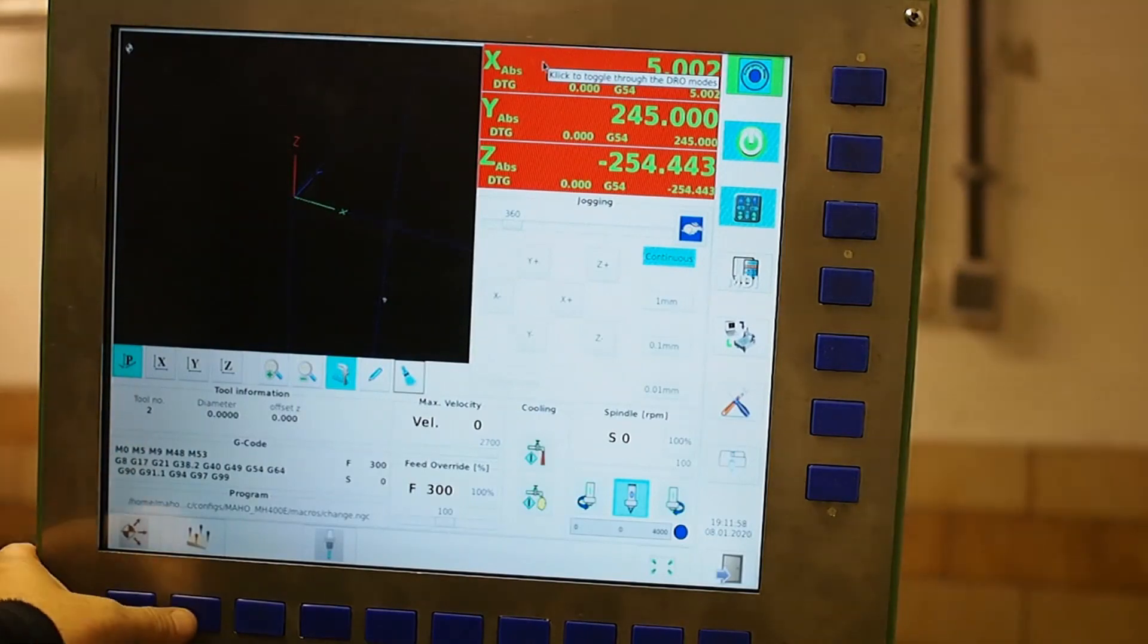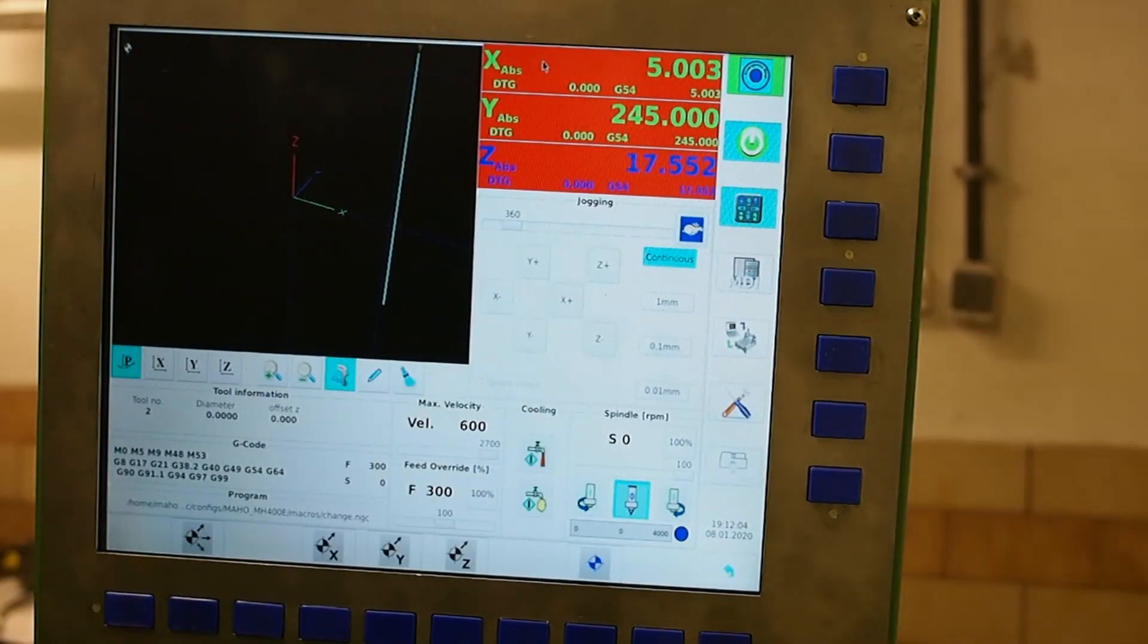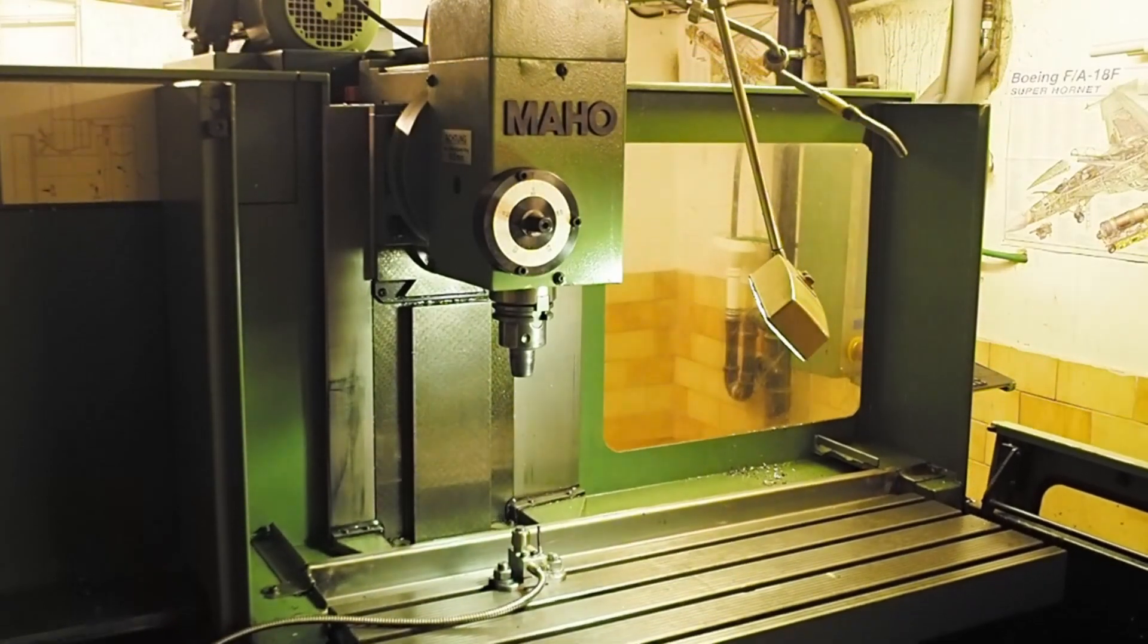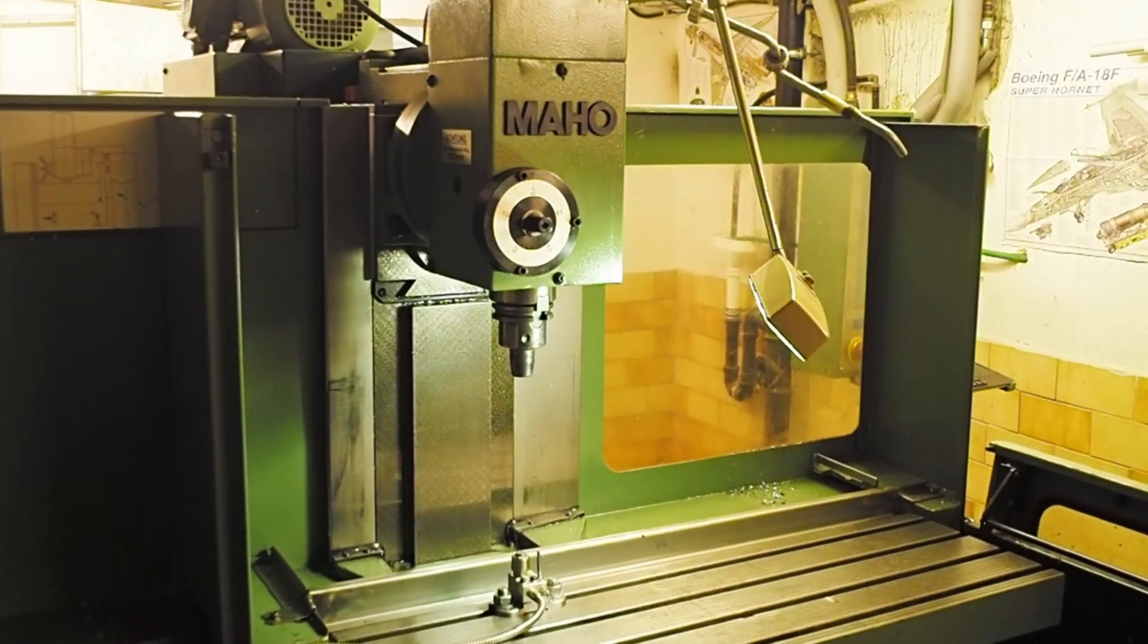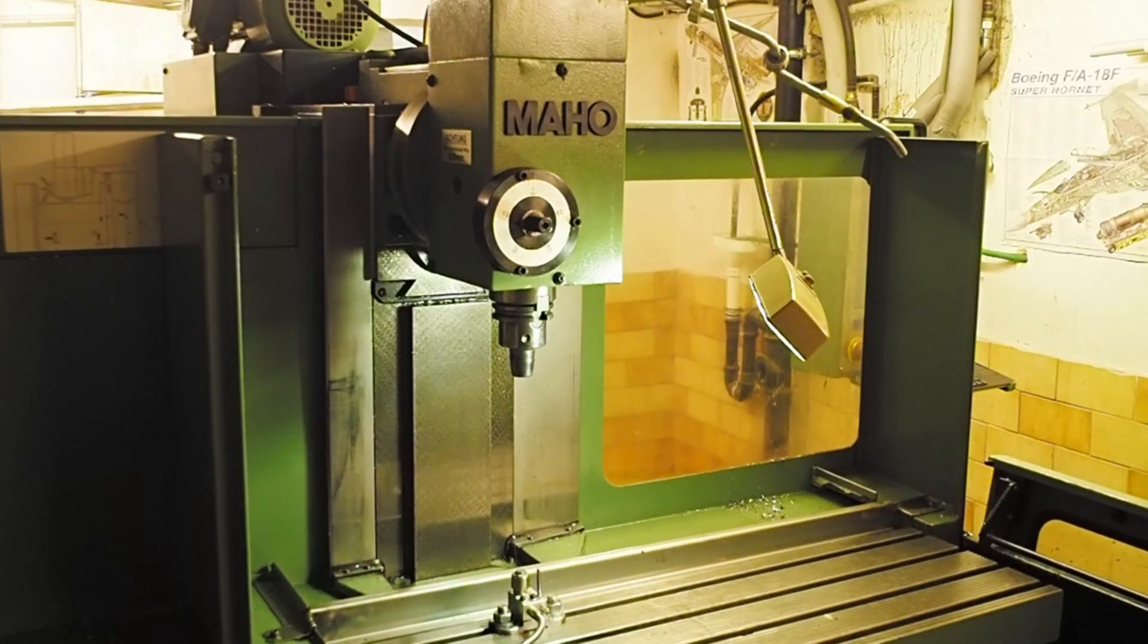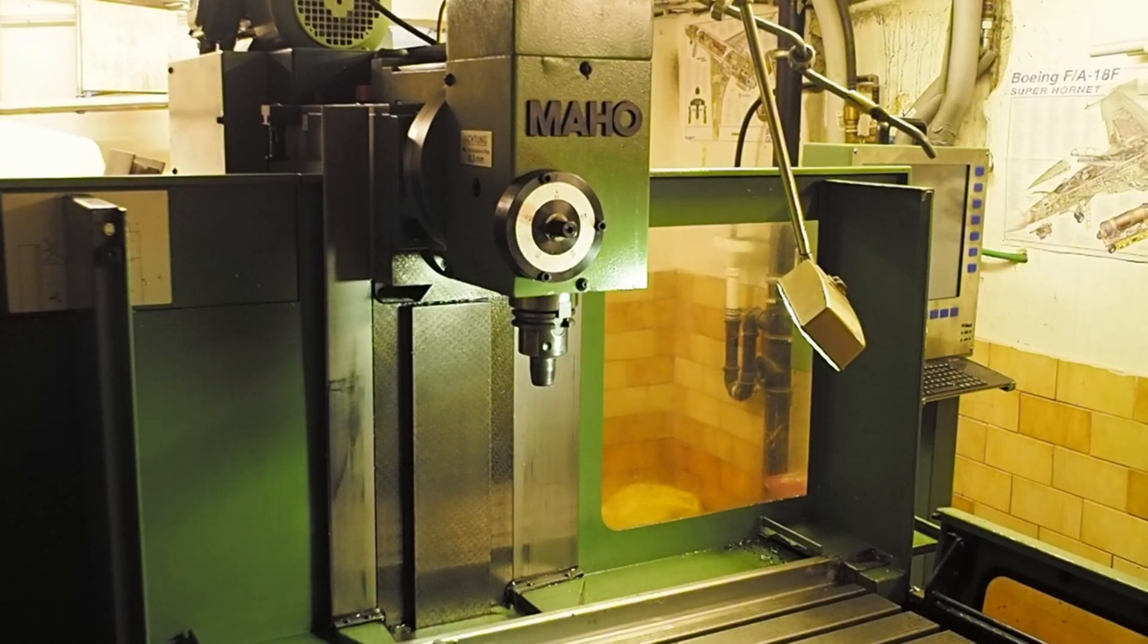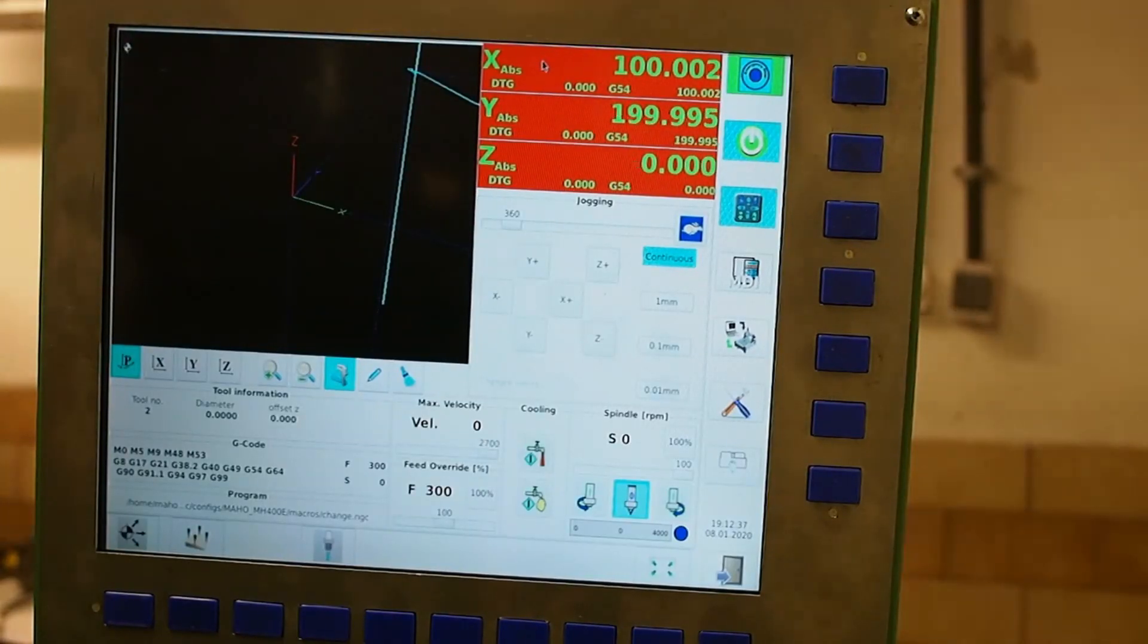I'll just home the machine. So we'll home the axes. On this machine the home switch is at the top of travel. Okay, so there you see the axis is homed. The head's right at the very top of travel.